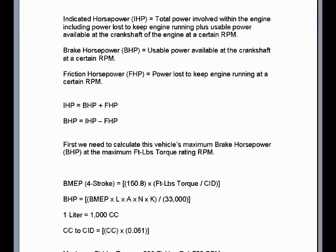As mentioned in previous lectures, there are three types of horsepowers involved in all engines and motors. There is the indicated horsepower, which is the sum of the power lost to keep the engine running plus the usable power. The brake horsepower is the usable power, and the friction horsepower is the power lost to keep the engine running.